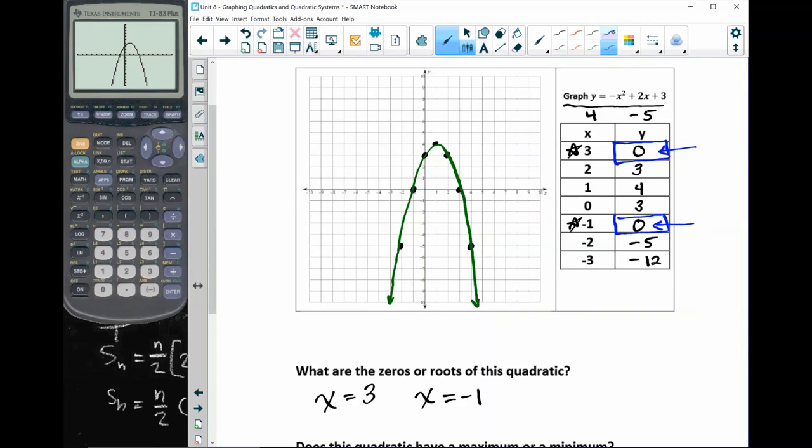So remember, the roots are where the parabola crosses the x-axis. So that means right here and right here. And if you look at those points, this point is where x equals 3 and this point is where x equals negative 1. So these two numbers are my roots or zeros of the equation.